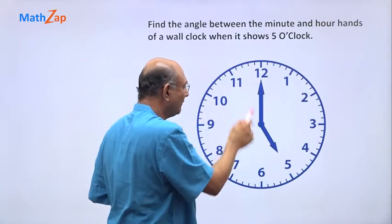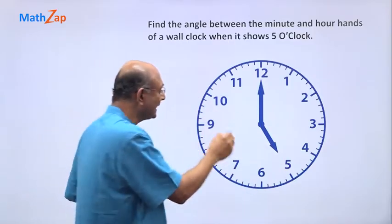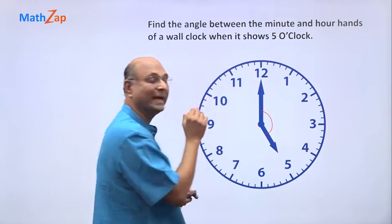This is the minute hand showing 12 and this is the hour hand pointing to 5. And what is the angle we want? This is the angle we want.